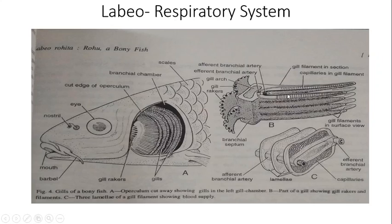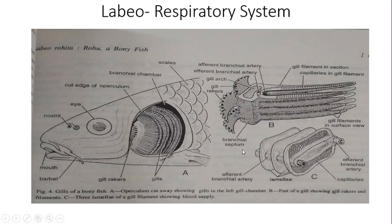Thus there are eight hemibranches or four holobranches, only attached to the first four branchial arches. The fifth gill slit is present on either side beneath the operculum. Gill rakers do not permit food particles to enter the gill chamber. The fish uses oxygen dissolved in water for respiration. Thank you very much.